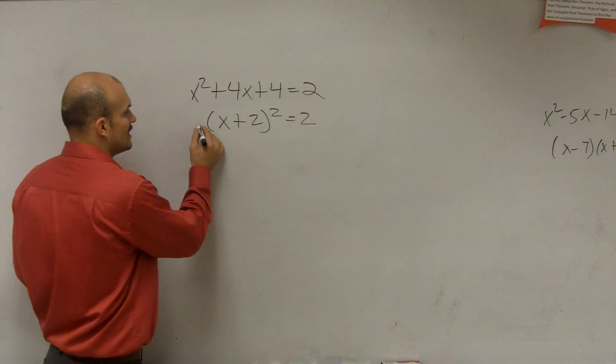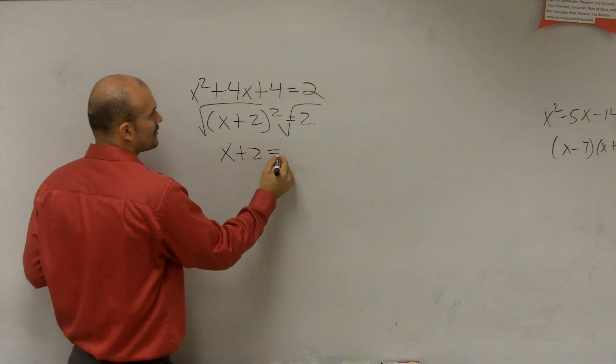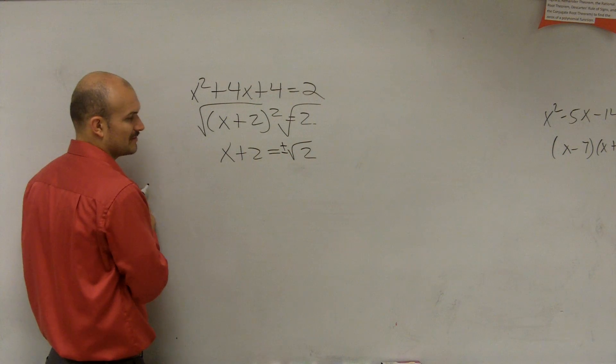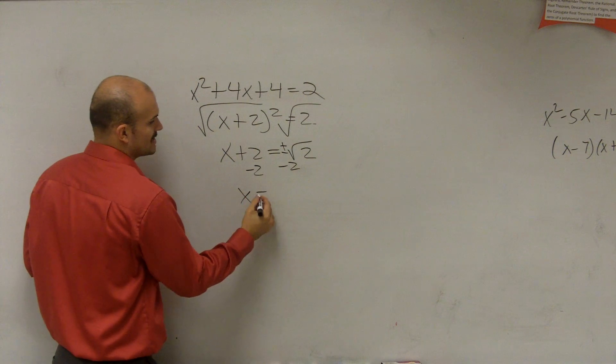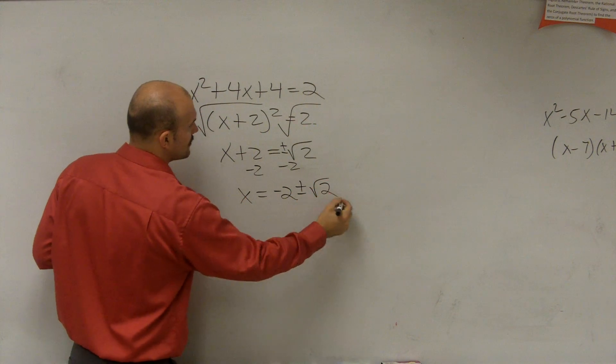So now what I can use is my inverse operations. So therefore, I have x plus 2 equals the square root of 2, plus or minus the square root of 2, right? Subtract 2. Therefore, you get x equals negative 2, plus or minus the square root of 2.